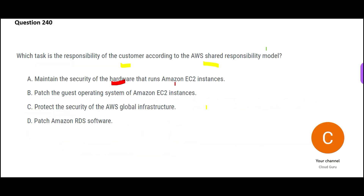Maintaining the hardware and the security of hardware — for example, AWS puts security guards at data centers. That is not your responsibility. Similarly, security of the global infrastructure — the Ohio data center, London data center, Paris data center — as a customer you don't even know where in Paris they have a data center, so how will you decide the security for it? That is AWS's responsibility.